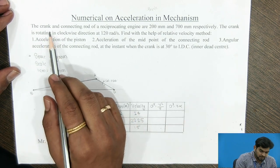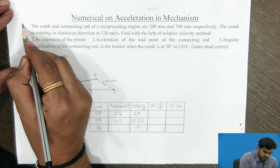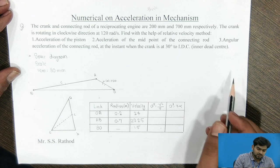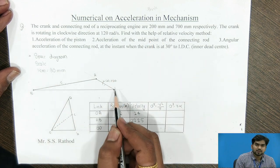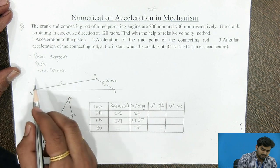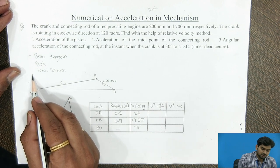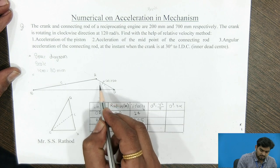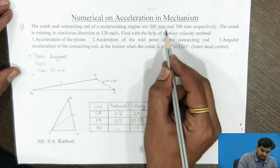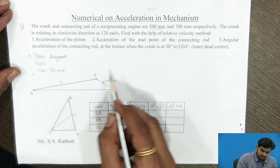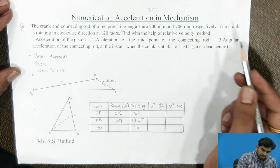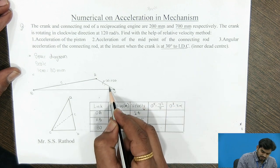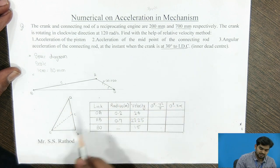This is the numerical as you have seen. As per the given data, we have drawn the space diagram by taking a suitable scale, that is 1 cm equal to 80 mm. We have drawn this space diagram where the length of the crank is 200 mm and the length of the connecting rod is 700 mm, and the angle of the crank with IDC is 30 degrees.